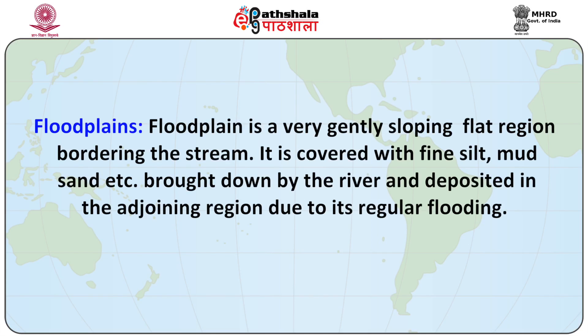Flood plains: a flood plain is a very gently sloping flat region bordering the stream. It is covered with fine silt, mud and sand brought down by the river and deposited in the adjoining region due to its regular flooding. This regular flooding enriches the soil and makes it a very good fertile land suitable for cultivation. A river flowing across a flood plain may either form meanders in its course or develop numerous channels due to deposition of sediment load on its bed. It also gives rise to embankments known as natural levees running along it for a fairly long distance.